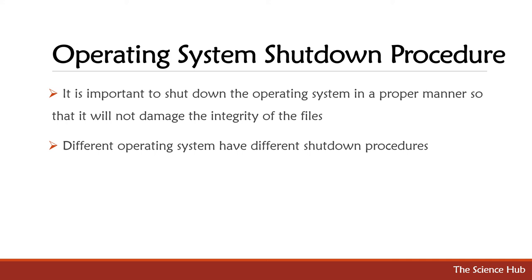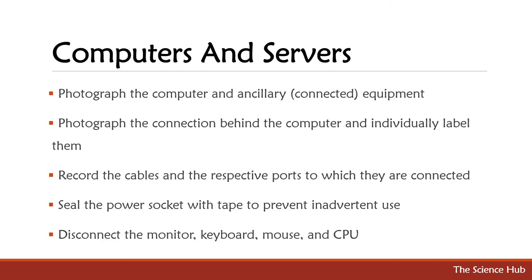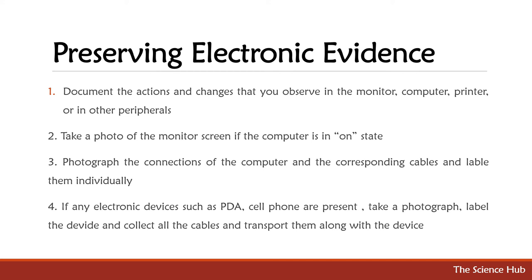Operating system shutdown procedure: it is important to shut down the operating system properly so that it will not damage the integrity of the files. Different operating systems have different shutdown procedures. For computers and servers: photograph the connections behind the computer and individually label them. Record the cables and the respective ports to which they are connected. Seal the power socket with tape to prevent accidental reconnection. Disconnect the monitor, keyboard, mouse, and CPU.